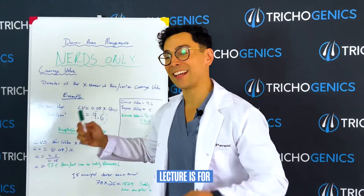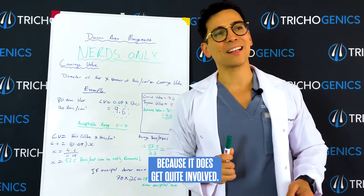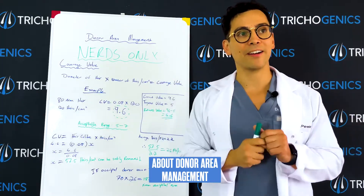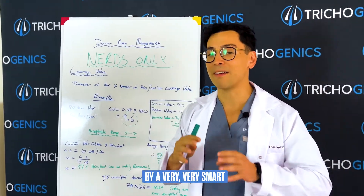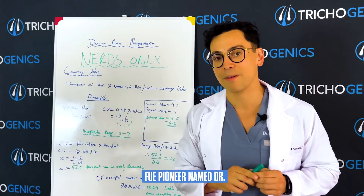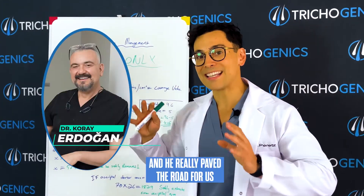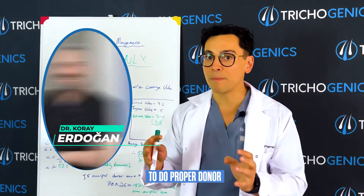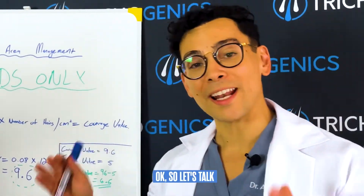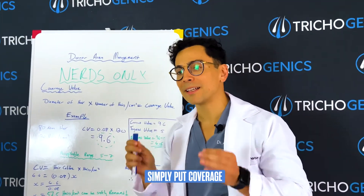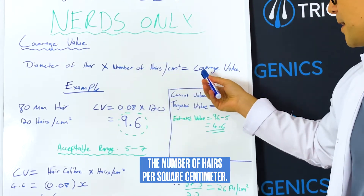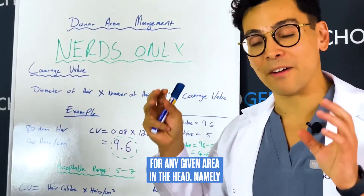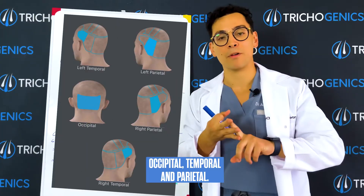Today's lecture is for nerds only because it does get quite involved. The first thing you have to understand about donor area management is something called coverage value. Coverage value was discovered by a very smart FUE pioneer named Dr. Koray Erdogan, and he really paved the road for us to do proper donor management in patients. Simply put, coverage value is the diameter of the hair multiplied by the number of hairs per square centimeter — that will give you a value for any given area in the head, namely occipital, temporal, and parietal.